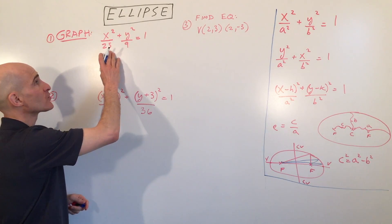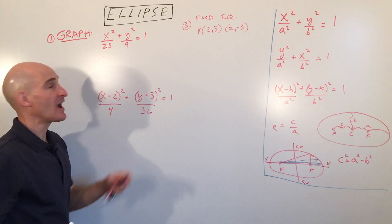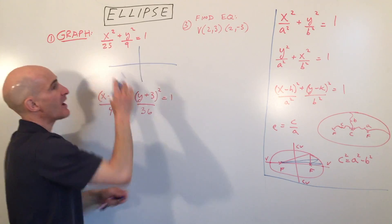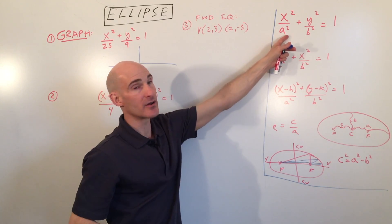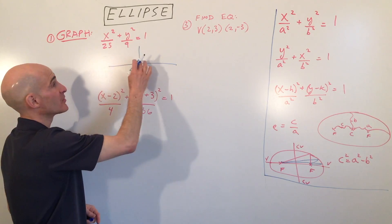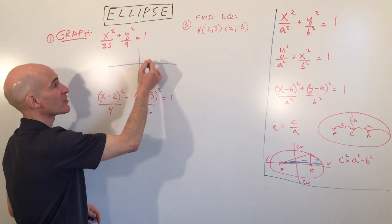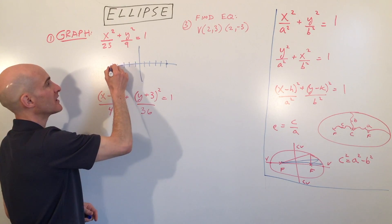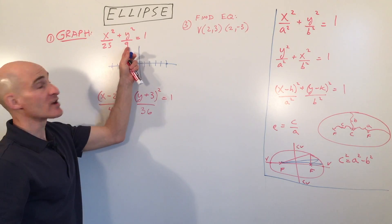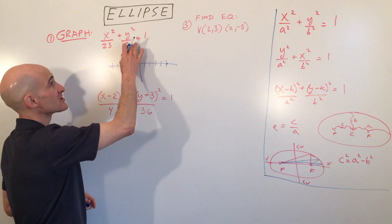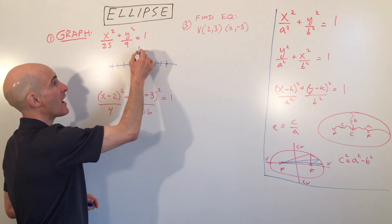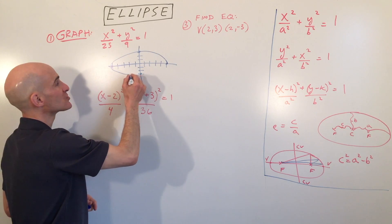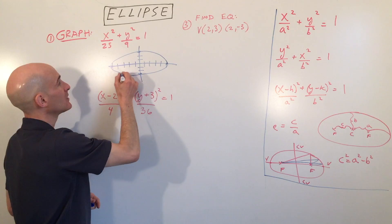For the first example, x squared over 25 plus y squared over 9 equals 1. To graph this, we see that 25 equals a squared, so in the x direction we go right 5 and left 5 — those are the vertices. Taking the square root of 9 gives us 3, and since 9 is underneath the y, we go up 3 and down 3. With those four points we can draw the ellipse.